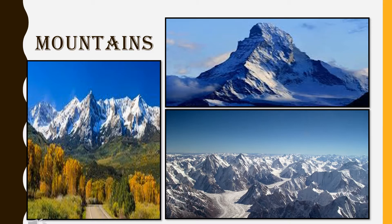Because of the harsh climate, less people live in the mountain areas. Since the slopes are steep, less land is available for farming. Mountains may be arranged in a line known as a range. The mountain system consists of a series of parallel ranges extending over hundreds of kilometers. The Himalayas, the Alps and the Andes are mountain ranges of Asia, Europe and South America.